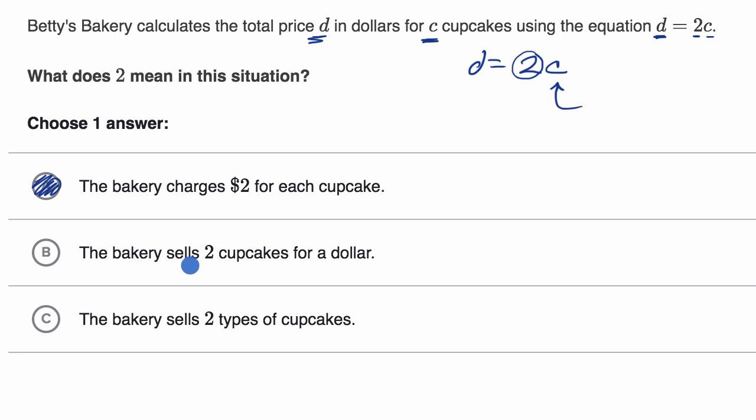The bakery sells 2 cupcakes for a dollar. No, that would not be the case. And you could even try it out. If we had 1 cupcake, so if c is 1, what is d going to be? Actually, let me just do that for you because it's interesting. So if you get 1 cupcake, you multiply it by 2, it's going to be $2. Two cupcakes, multiply it by 2, that's $4. It's consistent with this first choice, but to sell 2 cupcakes, it's not gonna be for a dollar, it's gonna be for $4.